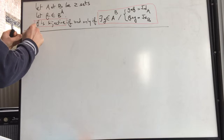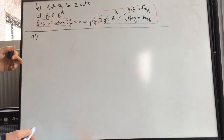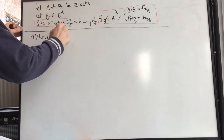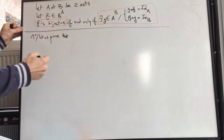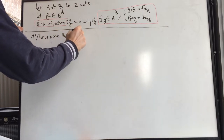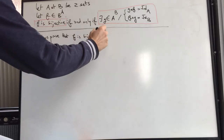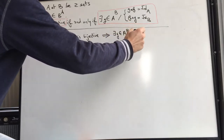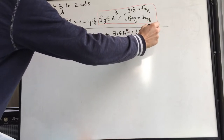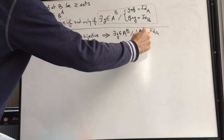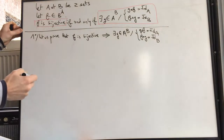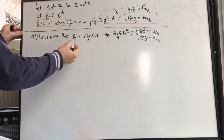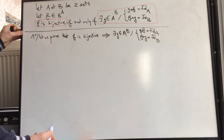First we are going to prove an implication. Let's prove that f is bijective implies there exists a unique g that belongs to A to the power of B such that g∘f is equal to the identity map of A, and f∘g is equal to the identity map of B. To prove an implication, we assume that the first proposition is true and then we prove that the second proposition is true.